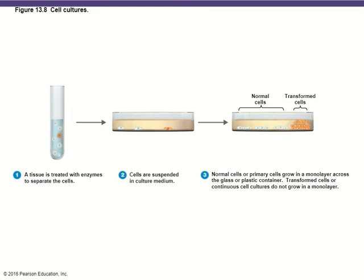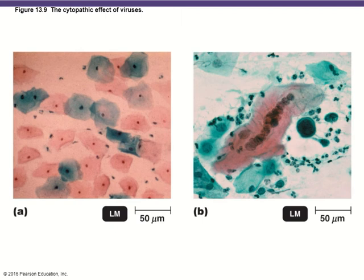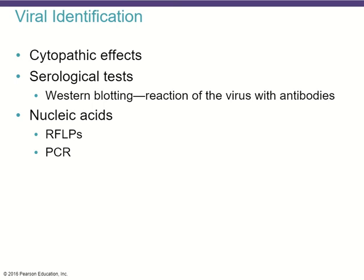Most cells will grow in a single layer or monolayer, but those that have been transformed by a virus do not grow in a typical monolayer and can grow in clumps. Viral identification involves identifying the cytopathic effects on those cells. It can also involve serological tests such as Western blotting, where the reaction of a virus with antibodies against that virus shows signals on an analysis. Additionally, it can involve looking for nucleic acids such as RFLPs and using polymerase chain reaction or PCR to amplify a limited number of nucleic acids into a large amount.